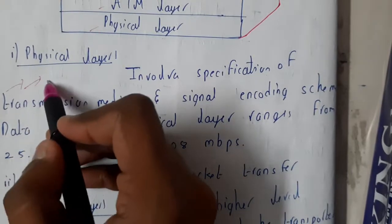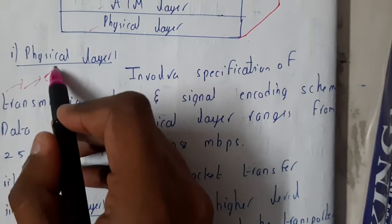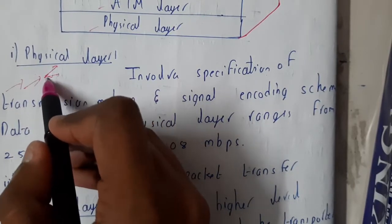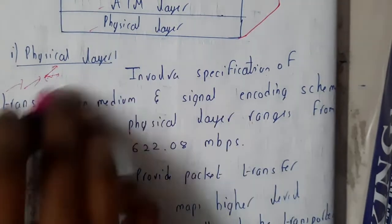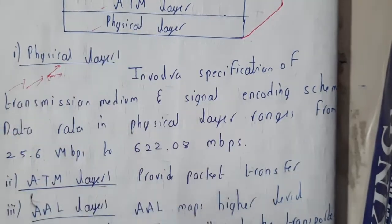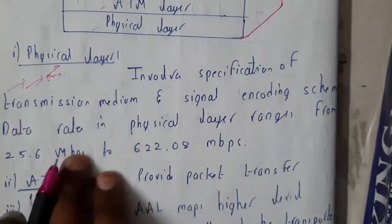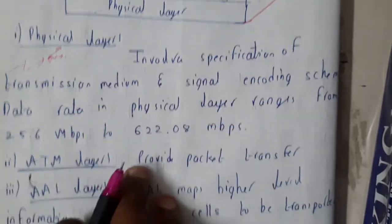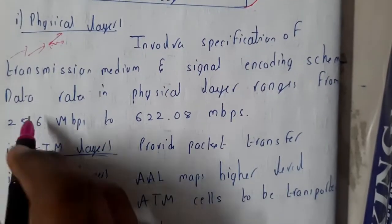In the physical layer, you specify whether you are transmitting in air or in a wired medium. If wired, you specify whether you are using copper wire, optical fiber wire, or any other kind of wire. Signal encoding and decoding is also done here, with data transfer rates from 25 Mbps to 622 Mbps.